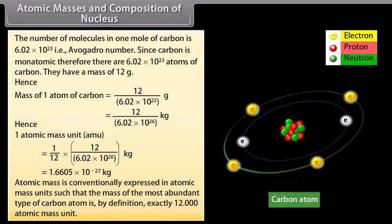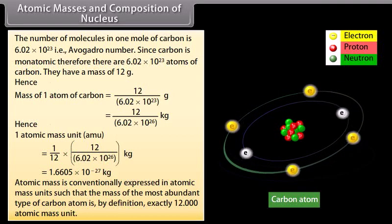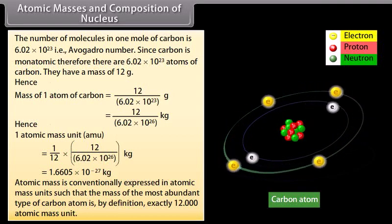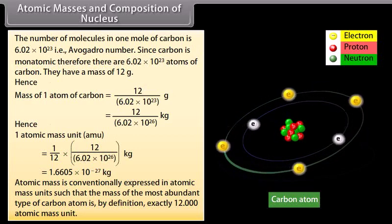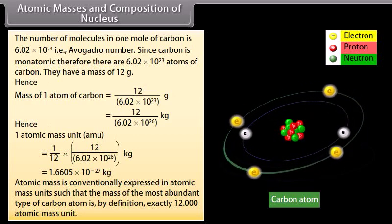Atomic mass is conventionally expressed in atomic mass units such that the mass of the most abundant type of carbon atom is by definition exactly 12 atomic mass unit.